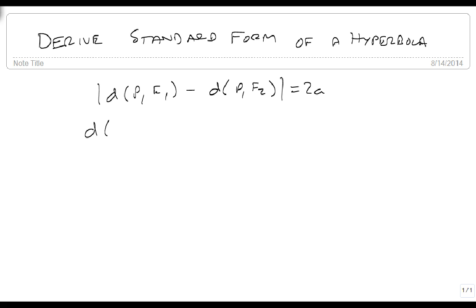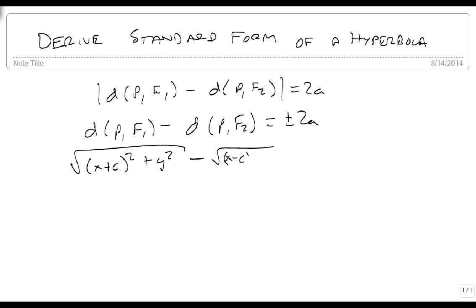Well this means that our distance of one minus the distance of the other is equal to plus or minus 2a, or the square root of x minus c squared plus y squared—that should be a plus for that one—minus the square root of x plus c squared plus y squared equals plus or minus 2a.